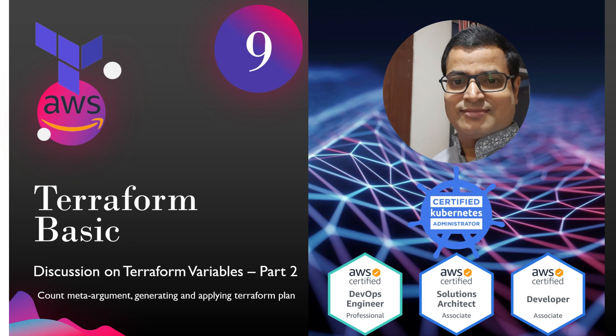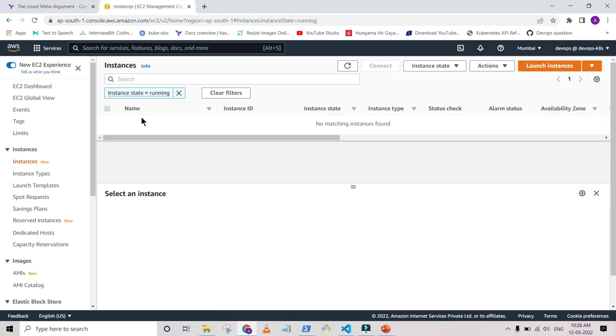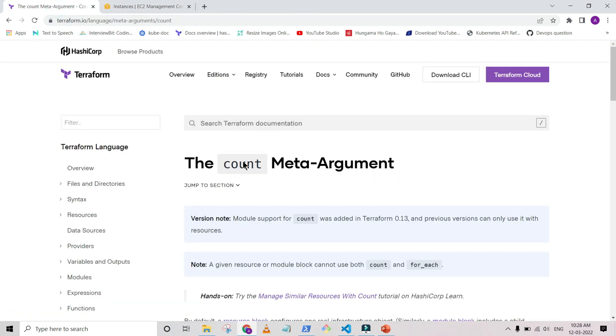To show you how we can simplify things in a better way, we are going to generate our plan and then apply it accordingly. In this session we are going to see things related to variables, and now I'm jumping to the lab session. This is my AWS instance — we don't have any instances currently running, and here you can see the count meta argument.